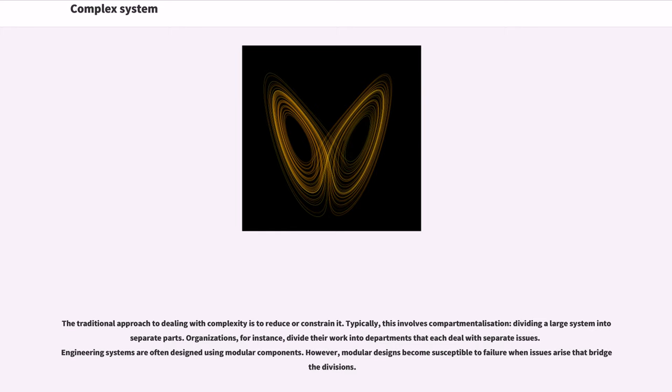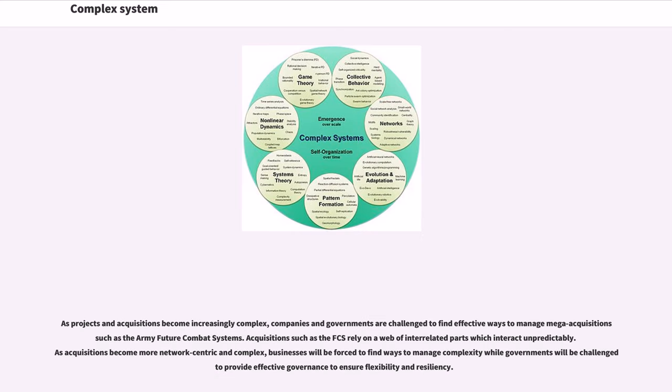However, modular designs become susceptible to failure when issues arise at the divisions. As projects and acquisitions become increasingly complex, companies and governments are challenged to find effective ways to manage mega-acquisitions such as the Army Future Combat Systems. Acquisitions such as the FCS rely on a web of interrelated parts which interact unpredictably. As acquisitions become more network-centric and complex, businesses will be forced to find ways to manage complexity while governments will be challenged to provide effective governance to ensure flexibility and resiliency.